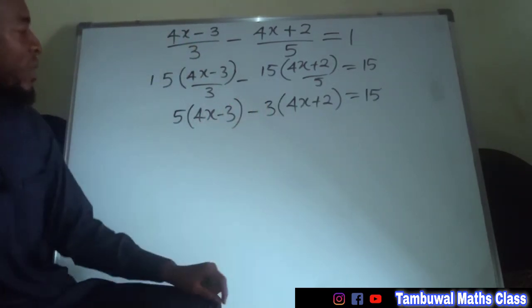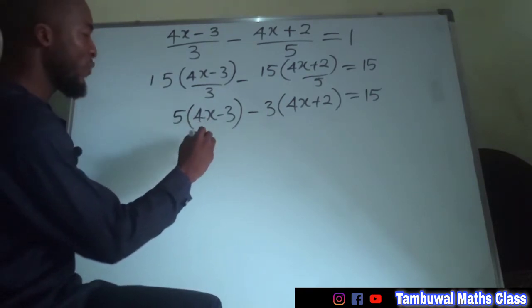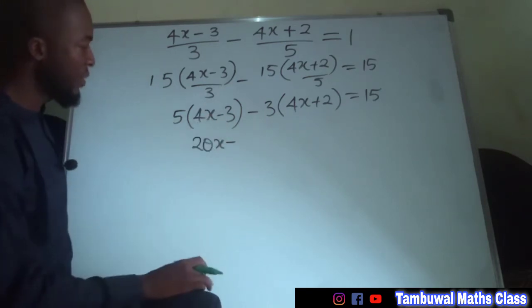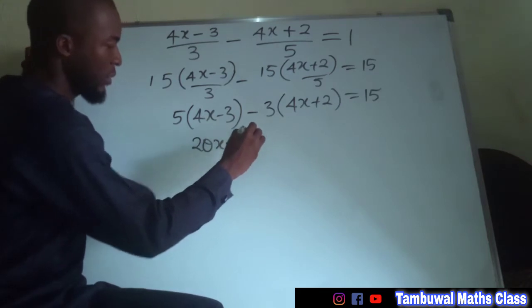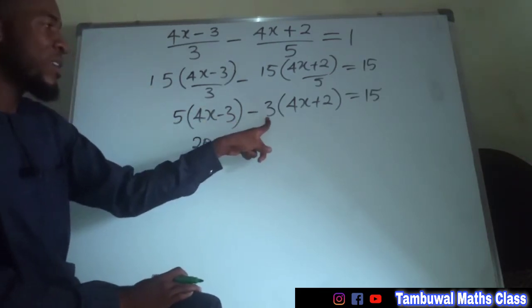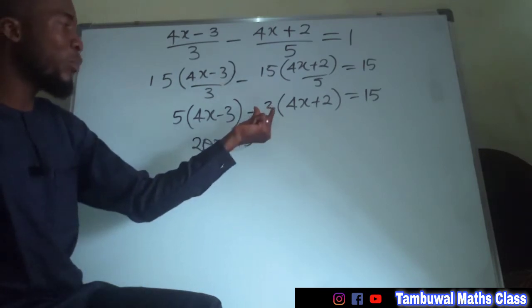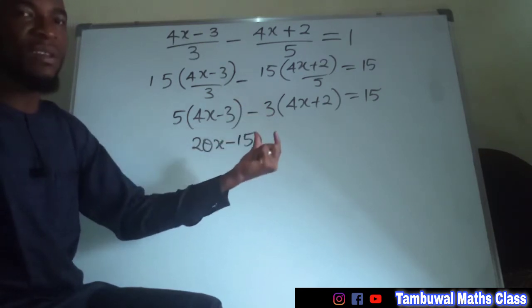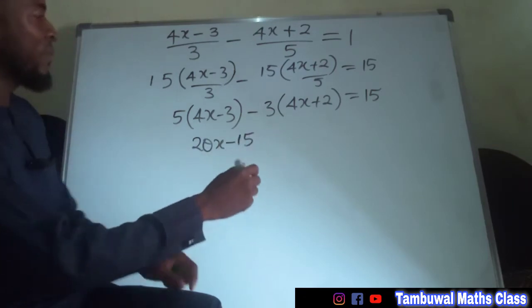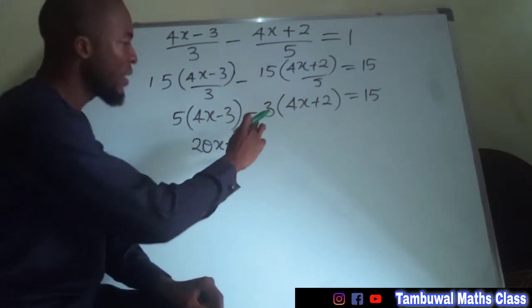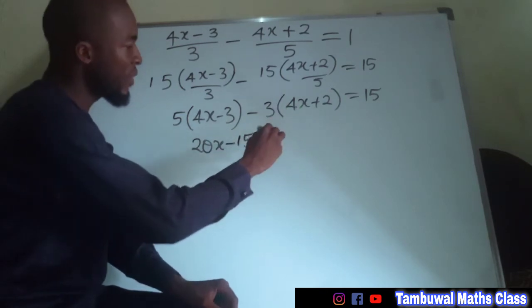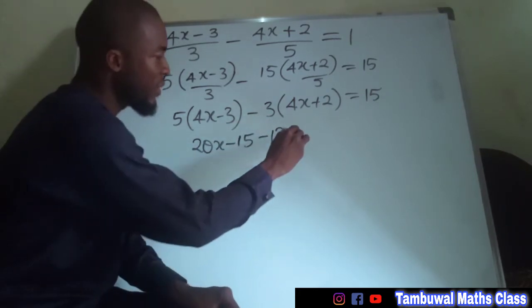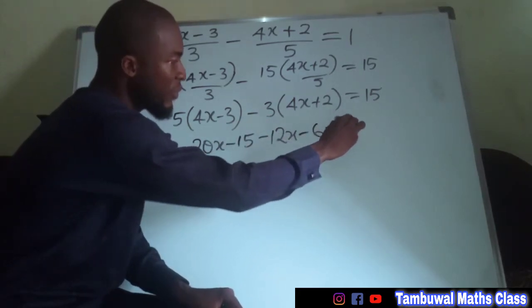Now we are free to expand these brackets. Five times (4x minus 3) gives us 20x minus 15. The mistake people make is multiplying positive three with the terms in the bracket instead of negative three. We take the number together with its sign, so we have negative three. Negative three times positive 4x is negative 12x, and negative three times positive two is negative six. The whole of this equals fifteen.